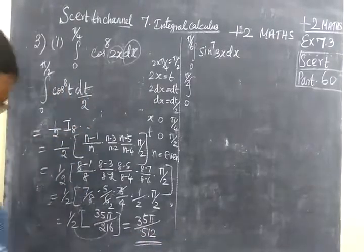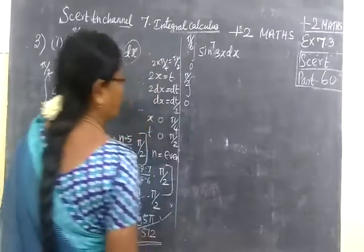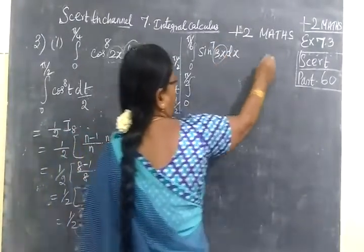Now we check the answer for that. 35 by 512. Now next also same type.